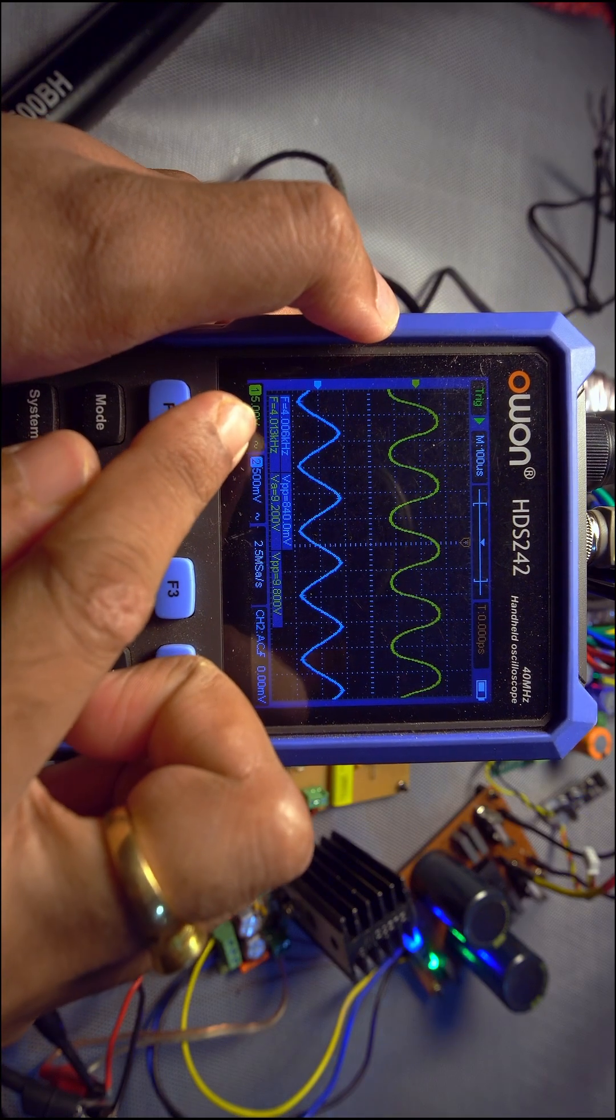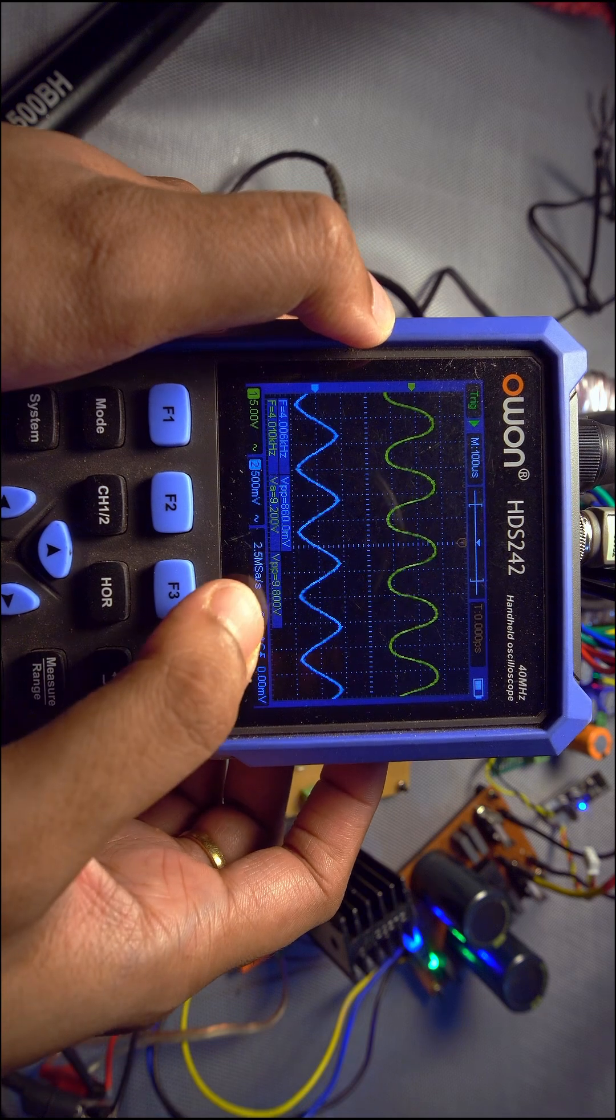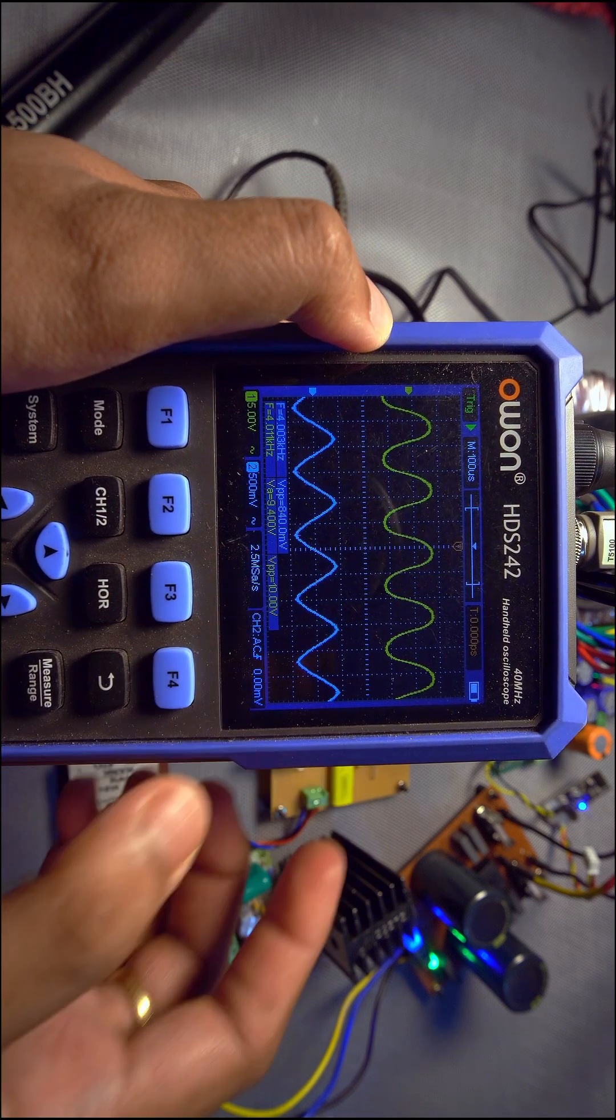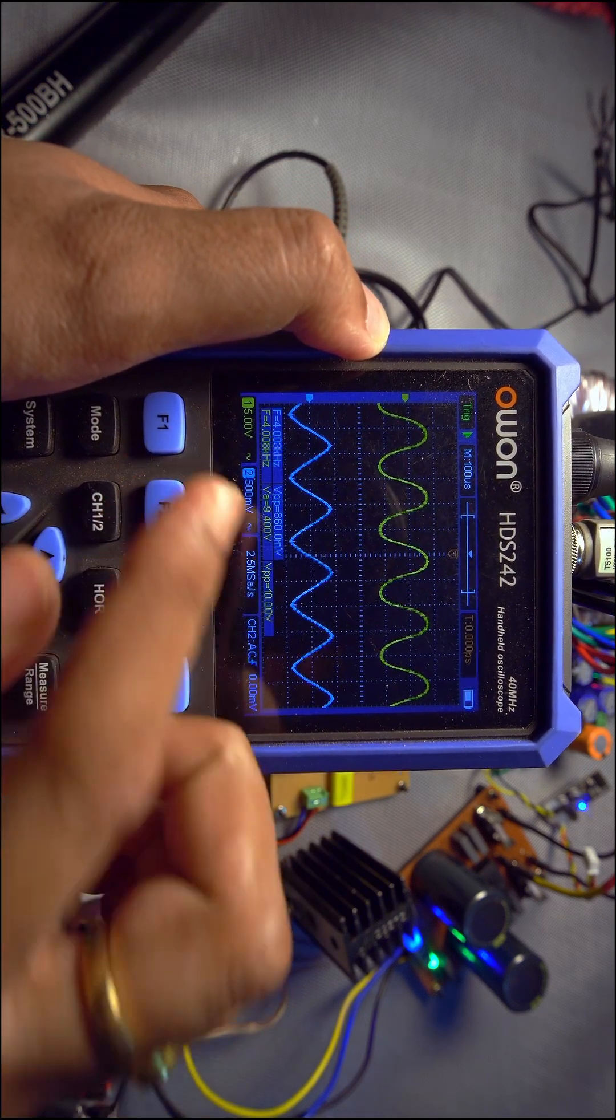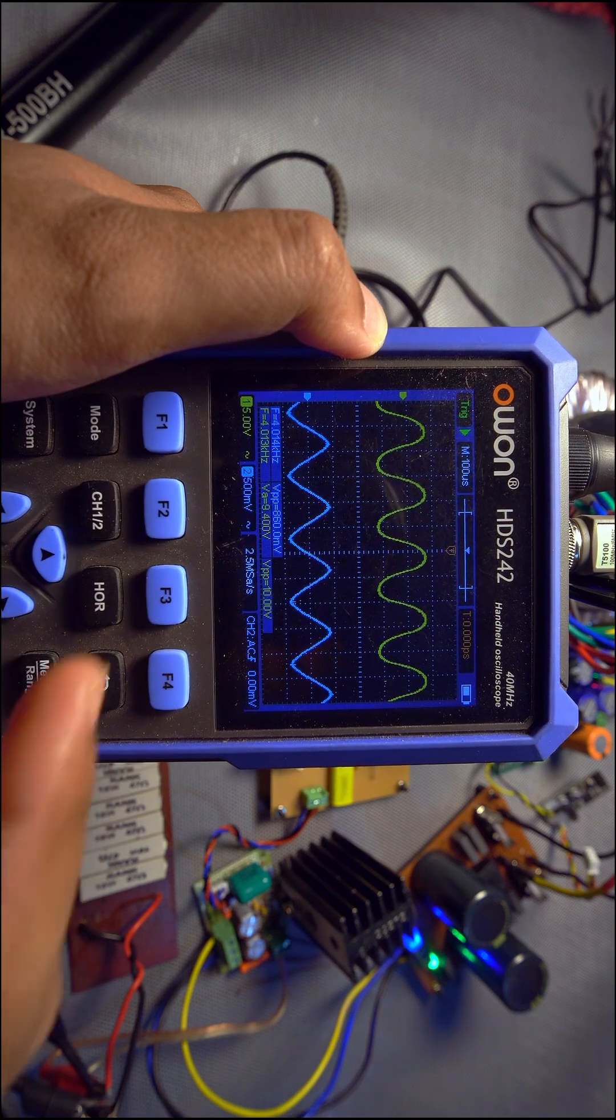So what I have done here is I have set the frequency to 4 kHz and I have set the V peak-to-peak to 10 volts. Our target is to see what happens at one octave down, that is at 2 kHz.